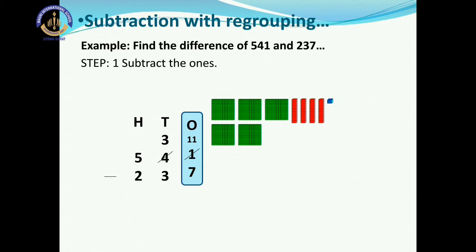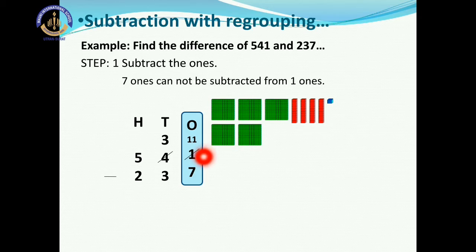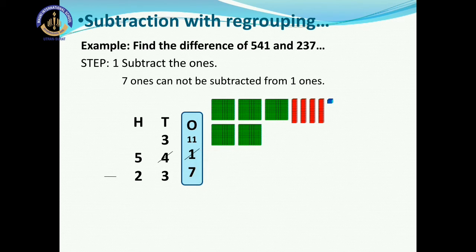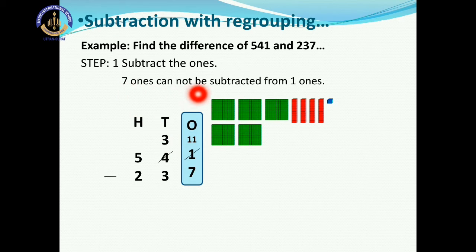Step 1 is subtract the ones. Here on the ones place, we have 1 and 7. Now, 7 is greater than 1, so 7 ones cannot be subtracted from 1 one. What do we have to do? We have to regroup the tens.